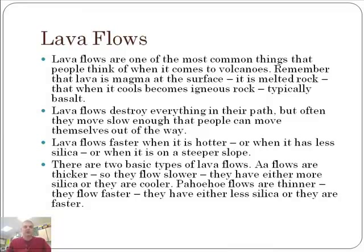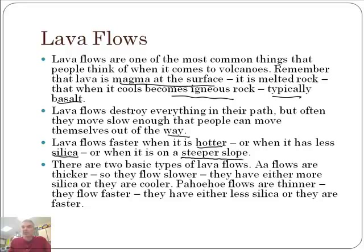Here's a bunch of text — you don't need to copy all of it down, but some interesting things. Lava flows are one of the most common things people think of when it comes to volcanoes. Remember that lava is magma at the surface — that's important. It is melted rock that when it cools becomes igneous rock, typically basalt. Lava flows destroy everything in their path, but they often move slow enough that people can get out of the way. Lava flows faster when it's hot, when it has less silica, or when it's on a steeper slope.